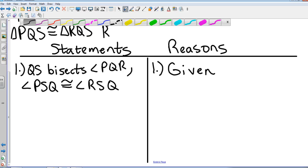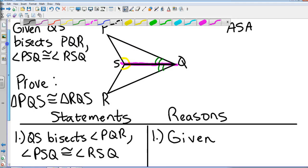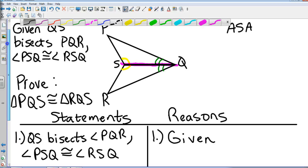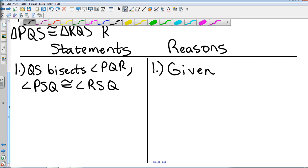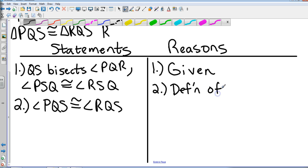My first statement: I've got QS bisects angle PQR and that angle PSQ is congruent to angle RSQ, that is my given. So I'm going to go ahead and define those equal angles that was given by our bisector. And so I'm going to call angle PQS and angle RQS congruent. Angle PQS is congruent to angle RQS.